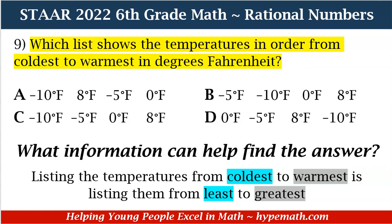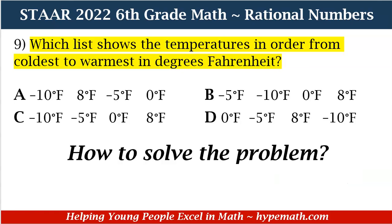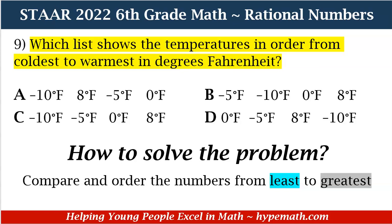When you're answering questions, think about what it's asking, because as you see in this problem, it doesn't say order the numbers from least to greatest or greatest to least — it says from coldest to warmest. You have to take a moment to think: if it's saying coldest, am I going to start with the larger numbers first or the smaller numbers? It would be the smaller numbers, because the smaller the number, even in negative numbers, the colder it is.